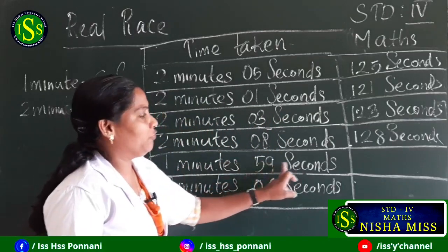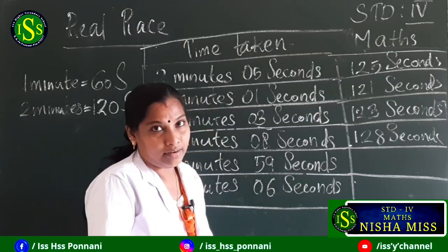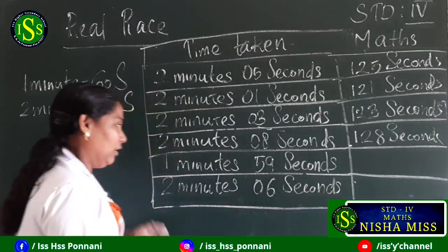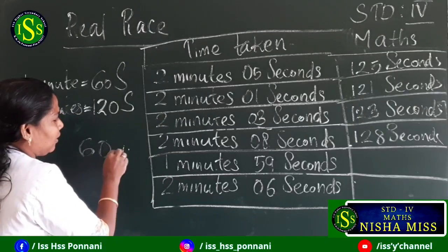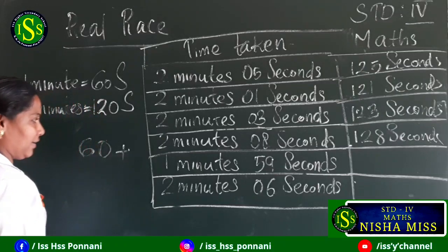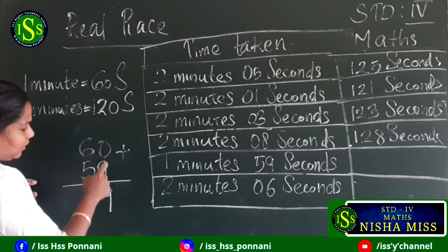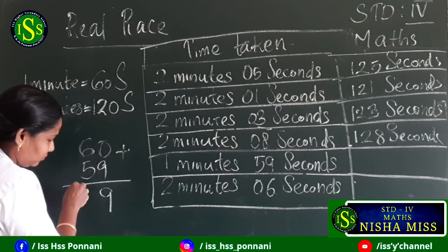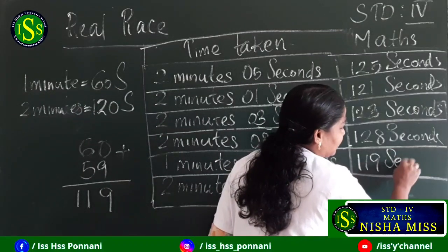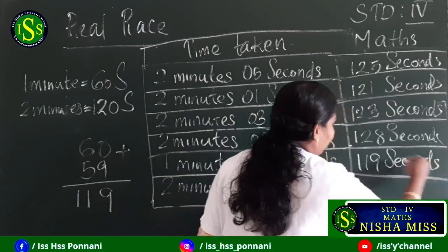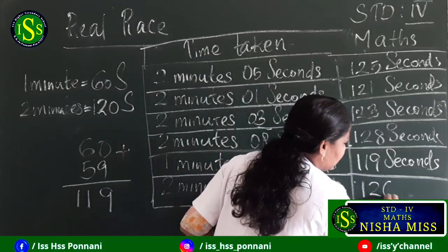Next: 1 minute 59 seconds. 60 plus 59 equals 119 seconds. And last: 2 minutes 6 seconds equals 126 seconds.